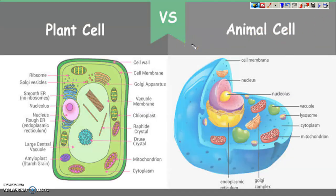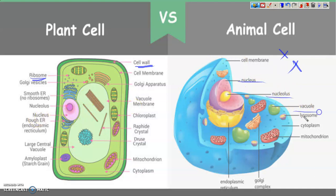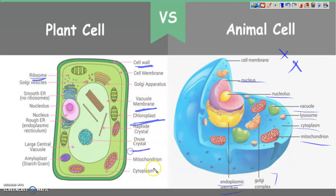First, we will see what are the main organelles which are present in the plant cell but not present in the animal cell. So there is cell wall which is not present in the animal cell. And you can see here nucleus, nucleolus — these all are present in the animal cell as well. But there are some other things like chloroplast, vacuole membrane, amyloplast, large central vacuole and that's all.